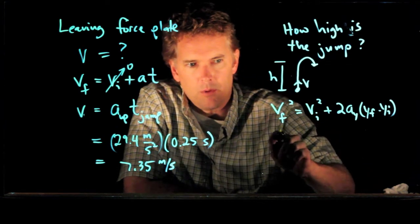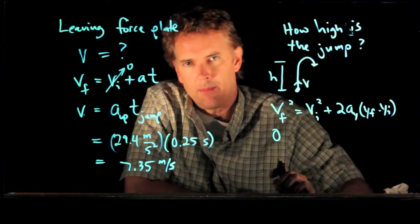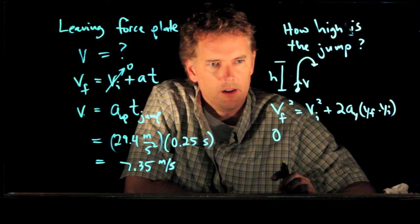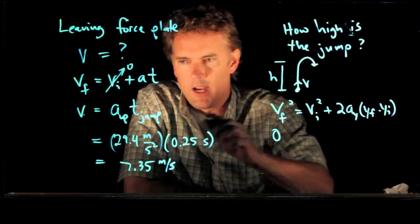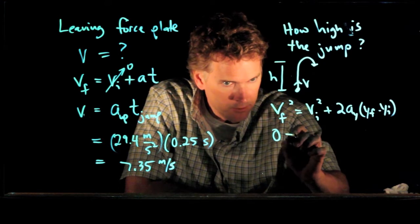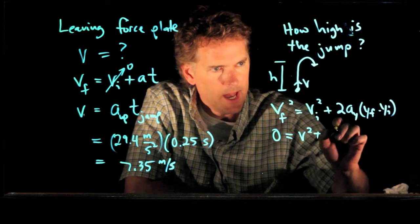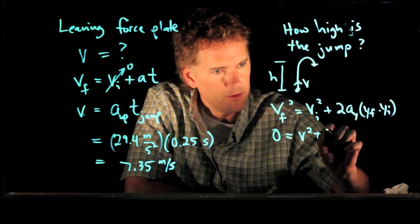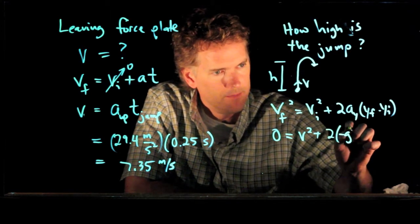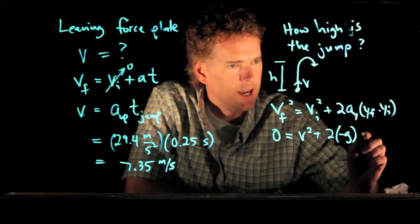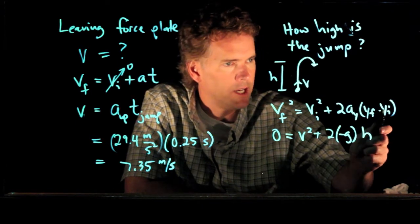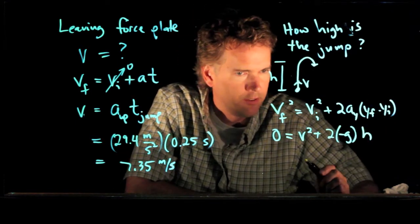Vf squared is 0. When you get to the top of that jump, you're moving at a speed of 0. Vi squared is just this V that we just solved for, so we'll call that V. And then we have acceleration due to gravity, which is negative g. And we have the height h, right? Y initial is 0, so y final is just h.